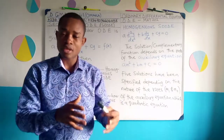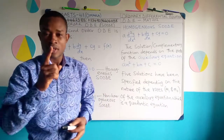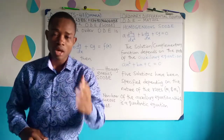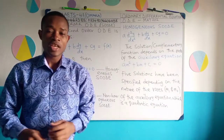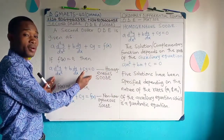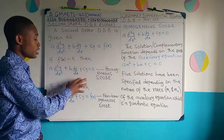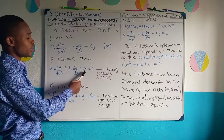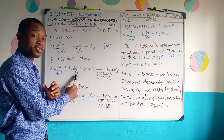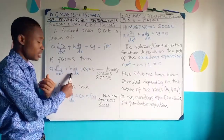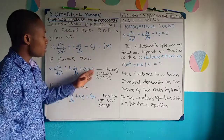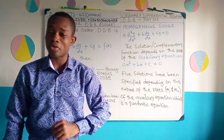There are types of second-order ODEs. A second-order ODE can be homogeneous or non-homogeneous. It is homogeneous when f(x) equals zero, giving: a(d²y/dx²) + b(dy/dx) + cy = 0. Here cy contains y as a variable (not differentiated), b(dy/dx) is the first derivative, and a(d²y/dx²) is the second derivative. When the right-hand side equals zero, it is called the homogeneous second-order ODE.